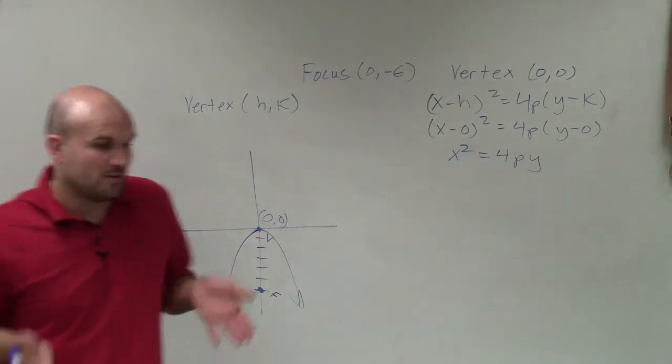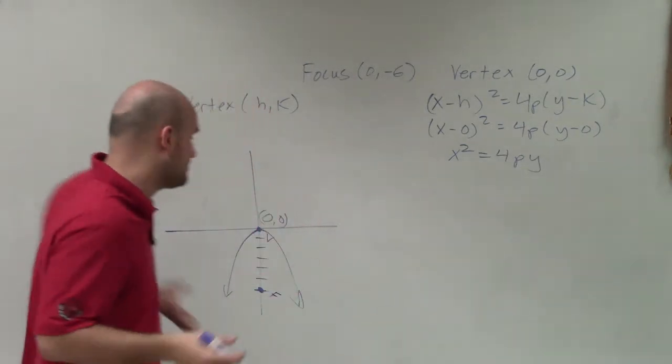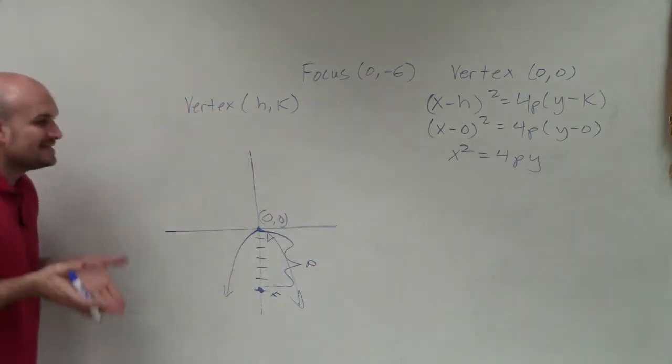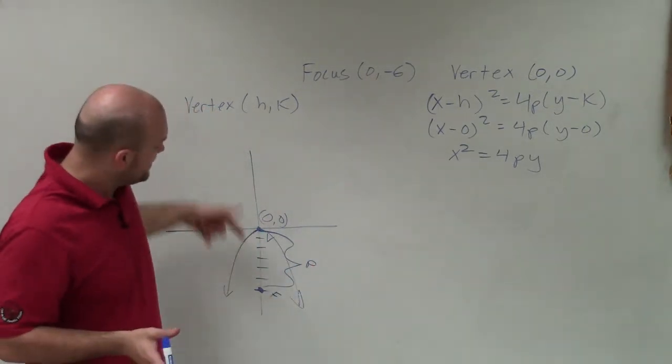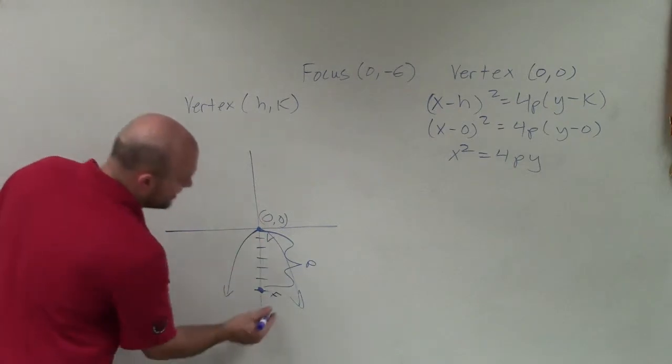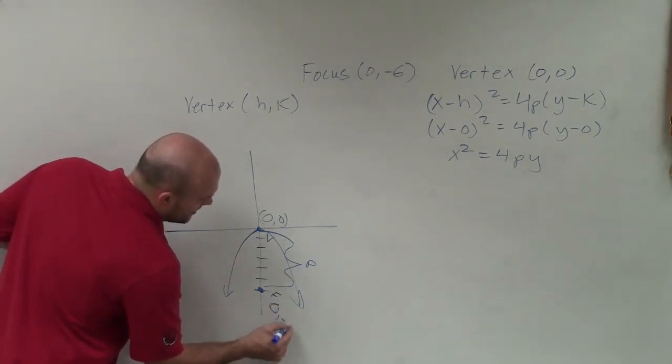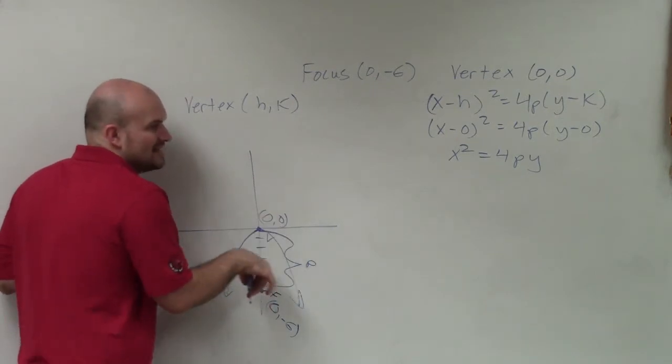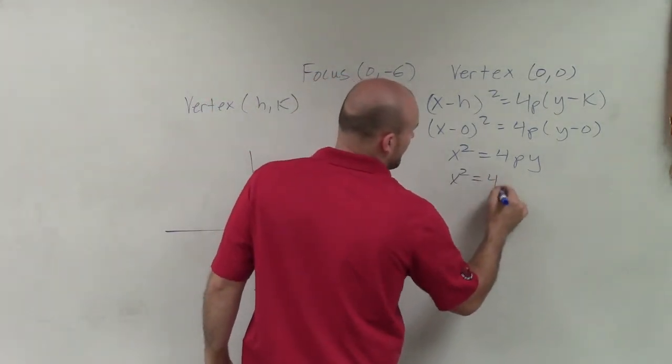Now I need to evaluate the value of p. Remember, p is the distance from your vertex to your focus. Since the focus is below the vertex, I need to plug in -6 because this focus is at (0, -6). The value of p is -6. So then x² = 4(-6)y.